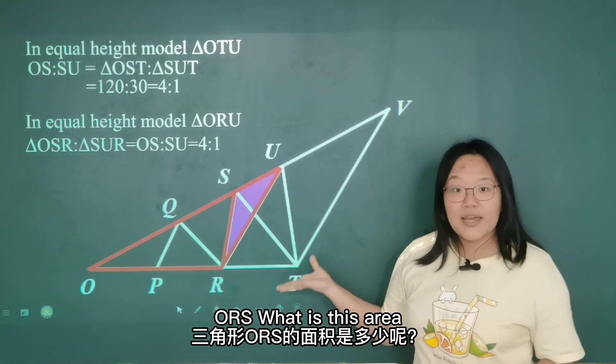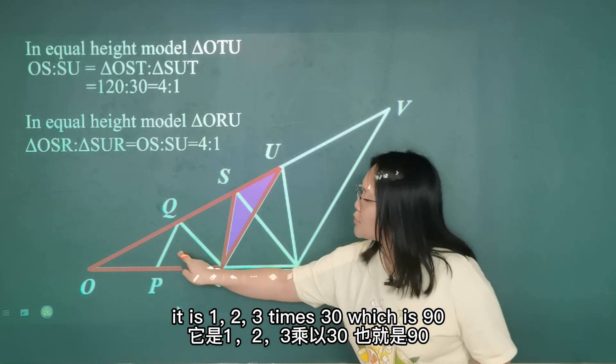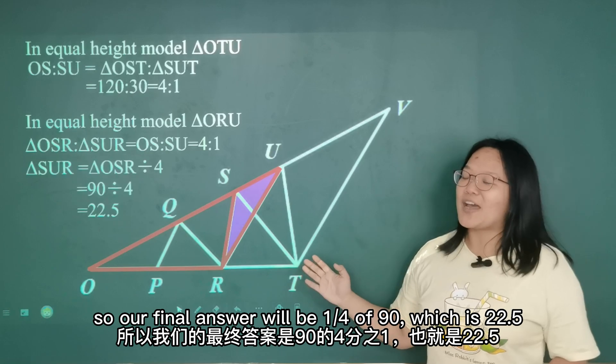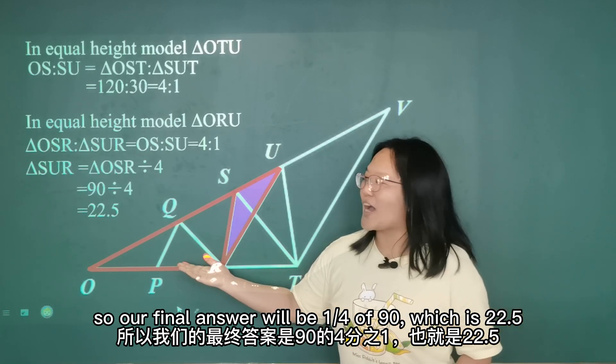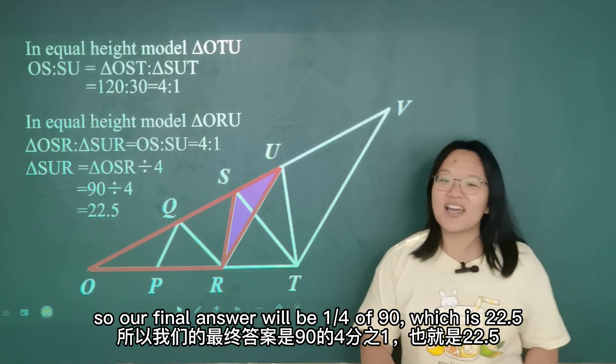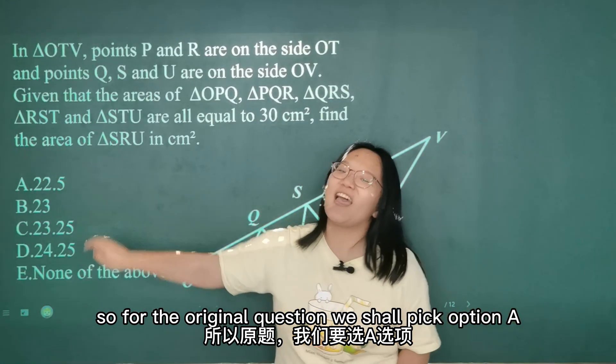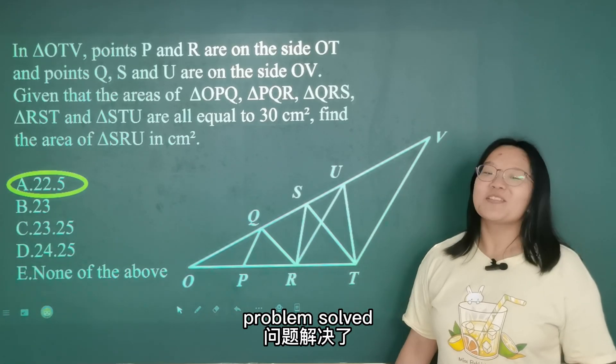ORS, what is this area? It is 1, 2, 3 times 30, which is 90. So our final answer will be a quarter of 90, which is 22.5. So for the original question, we shall pick option A. Problem solved.